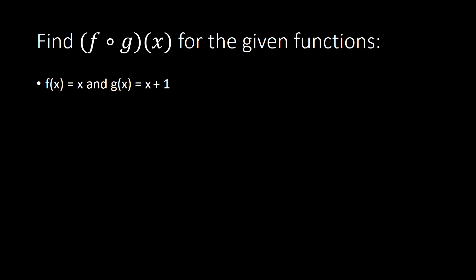Let us practice solving compositions of functions. We need to find f∘g(x) for the given functions f(x) = x and g(x) = x + 1. When we say compositions of functions, we normally see this symbol — like an 'o' — that is read as a circle. So f∘g(x) means that the first mentioned function is our container, meaning it contains g(x), so g(x) becomes an input value for f(x). So f∘g(x) is the same as f(g(x)).